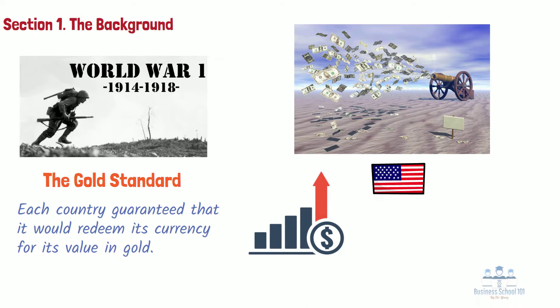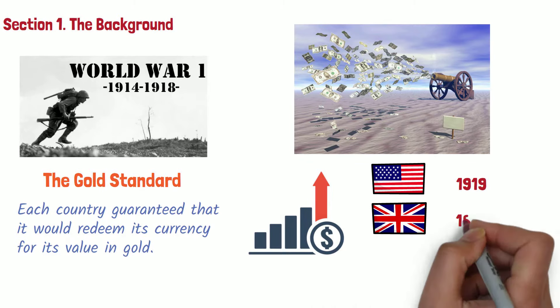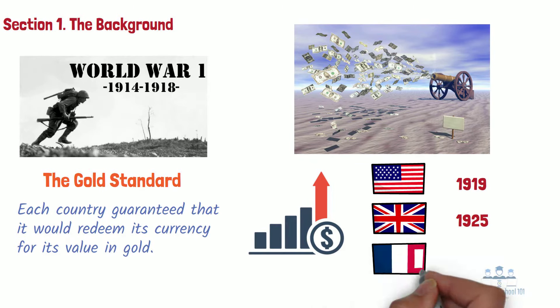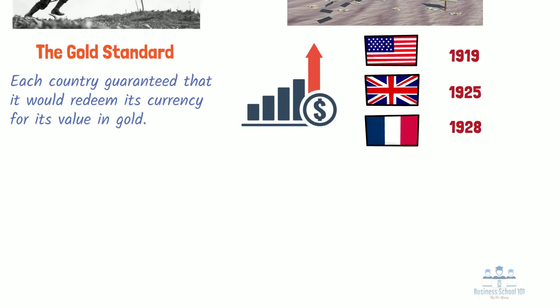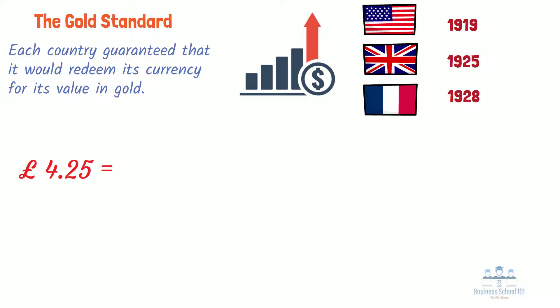The United States returned to the gold standard in 1919, Great Britain in 1925, and France in 1928. Great Britain returned to the gold standard by pegging the pound to gold at the pre-war gold parity level of £4.25 per ounce, despite substantial inflation between 1914 and 1925. This priced British goods out of foreign markets, which pushed the country into a deep depression.